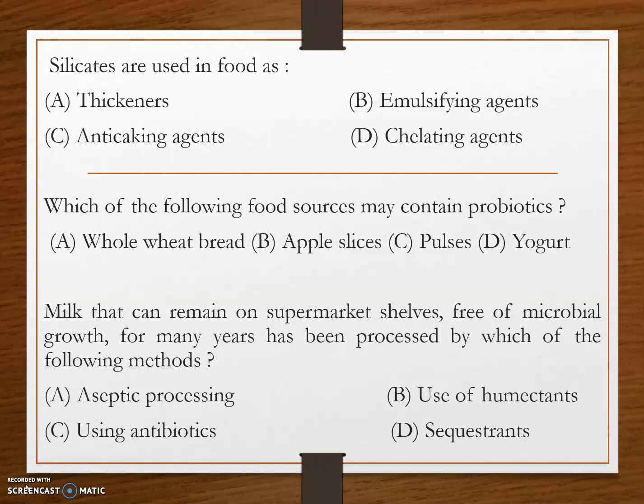Sodium metasilicate is an anti-caking agent added to materials to prevent lump or cake formation. Thickening agents are substances that can increase the viscosity of a liquid without substantially changing its other properties.